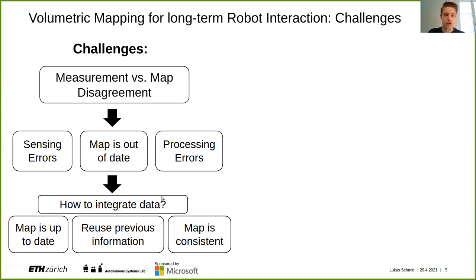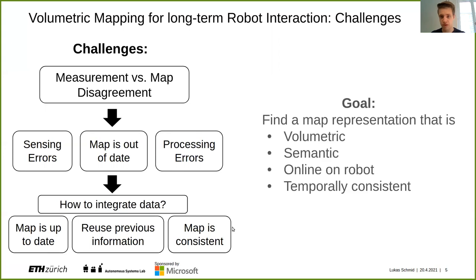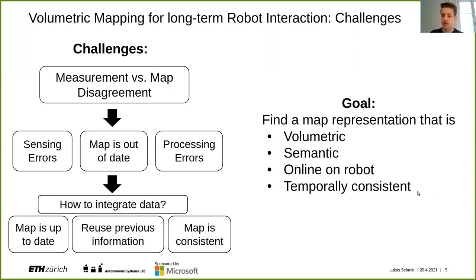An open question is how to integrate data to keep your map always up to date for the current environment, while simultaneously not discarding all previous information — for example, to average out sensing noise. And unfortunately, even if we stick to only the most recent measurements, you might still end up with a map that is inconsistent with itself. The goal of this project is to find a map representation that contains volumetric surface information and semantic scene understanding, can run efficiently online on a compute-constrained device such as a mobile robot or AR device, and handles temporal consistency.